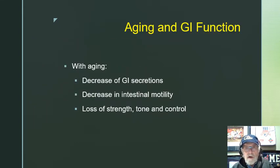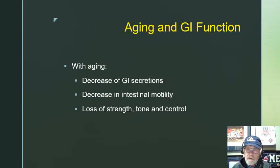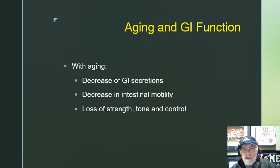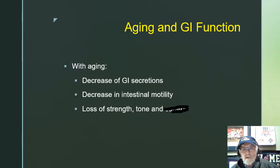With aging and GI function, we find decreased GI secretions, which are important in the digestive process, so digestion in older people tends to be slower. There's also a decrease in intestinal motility — peristalsis just doesn't work quite the same — so it takes longer to move from mouth to anus. There's also a loss of strength, tone, and control, so things like incontinence are more prominent in older people because the sphincters don't work the way they did before.